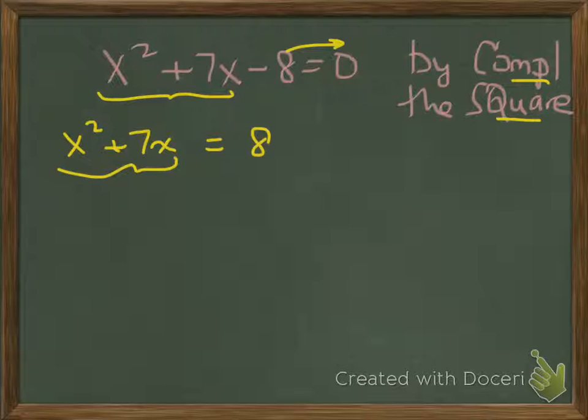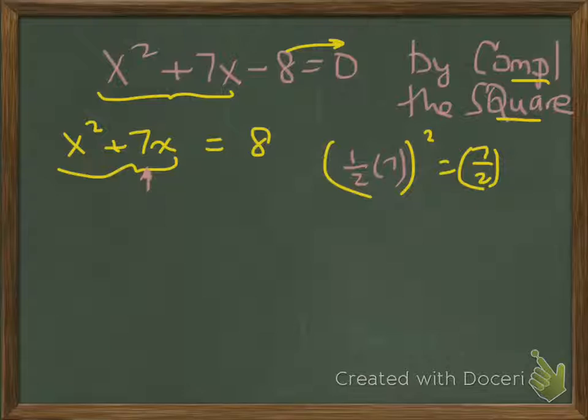In order to have a perfect square on the left side, we need to add one-half of the b coefficient squared. That would be one-half of 7, which is 7 halves, but we want to square this. 7 halves squared is 49 quarters.